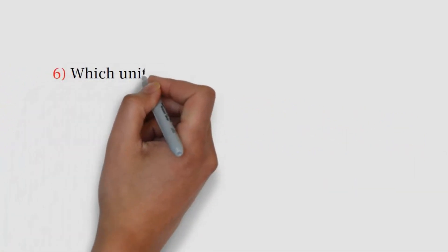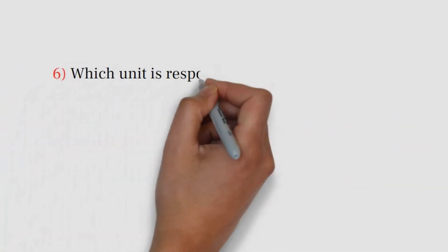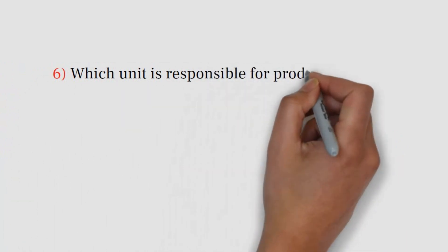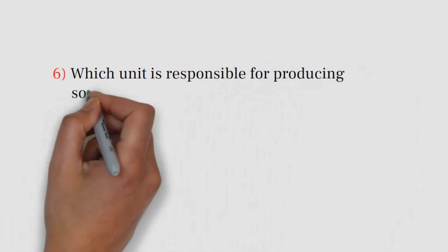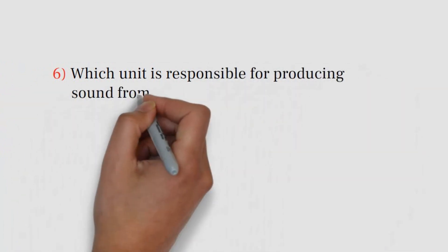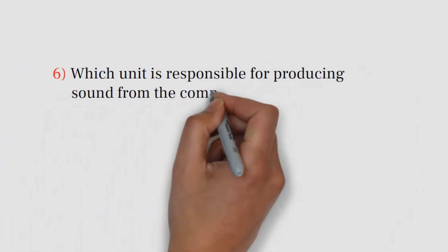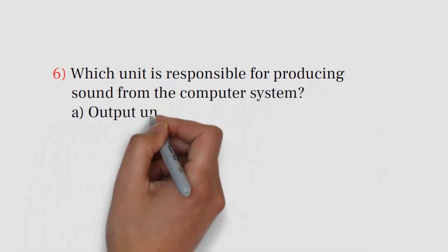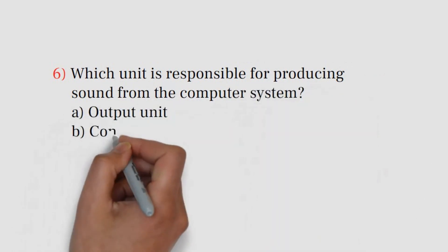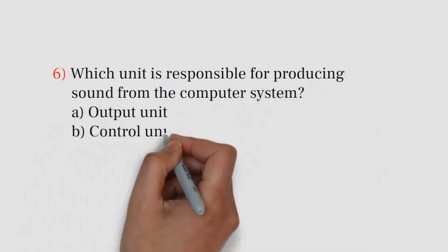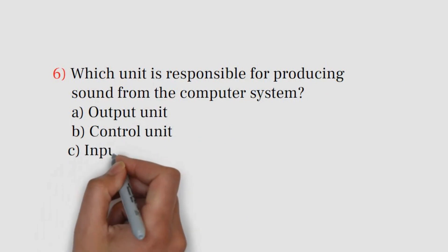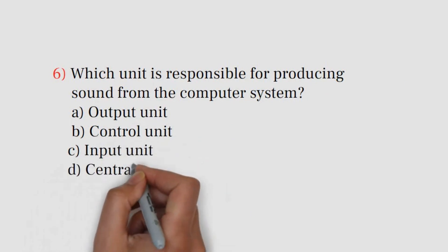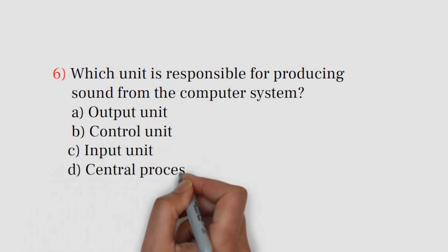Question number 6. Which unit is responsible for producing sound from the computer system? A. Output unit. B. Control unit. C. Input unit. D. Central processing unit.